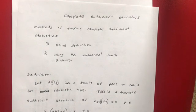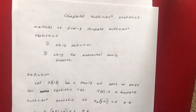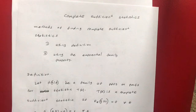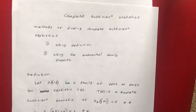Hi everyone. Today in our statistical inference lecture series I am going to talk about how to find a complete sufficient statistic. There are two methods to find a complete sufficient statistic. The first one is using the definition of a complete sufficient statistic, and the second one is using the fact that a statistic belonging to an exponential family distribution is a sufficient statistic, a minimum sufficient statistic, and also a complete sufficient statistic.